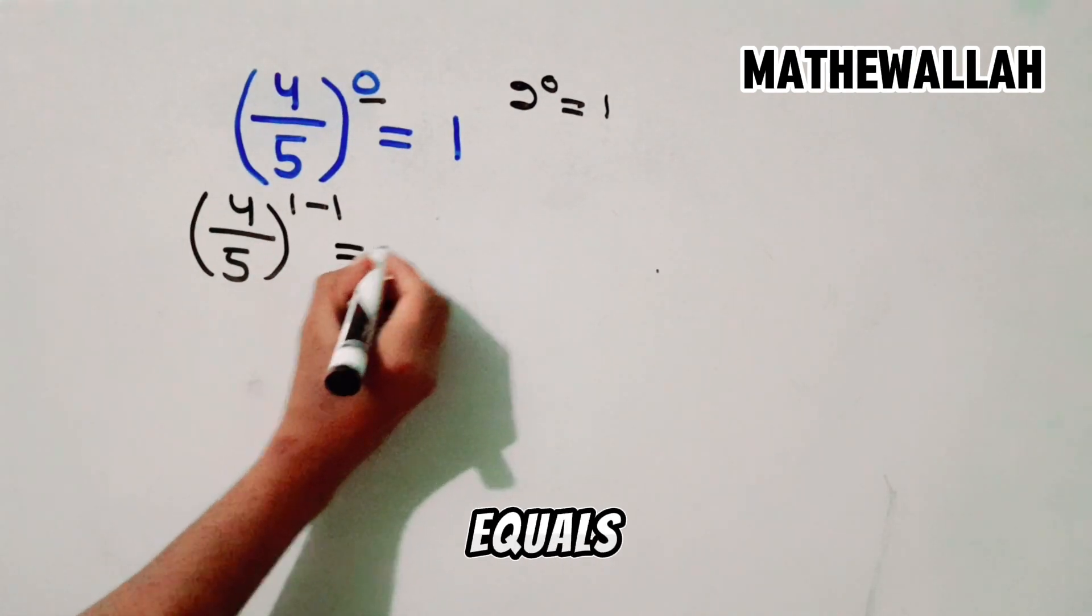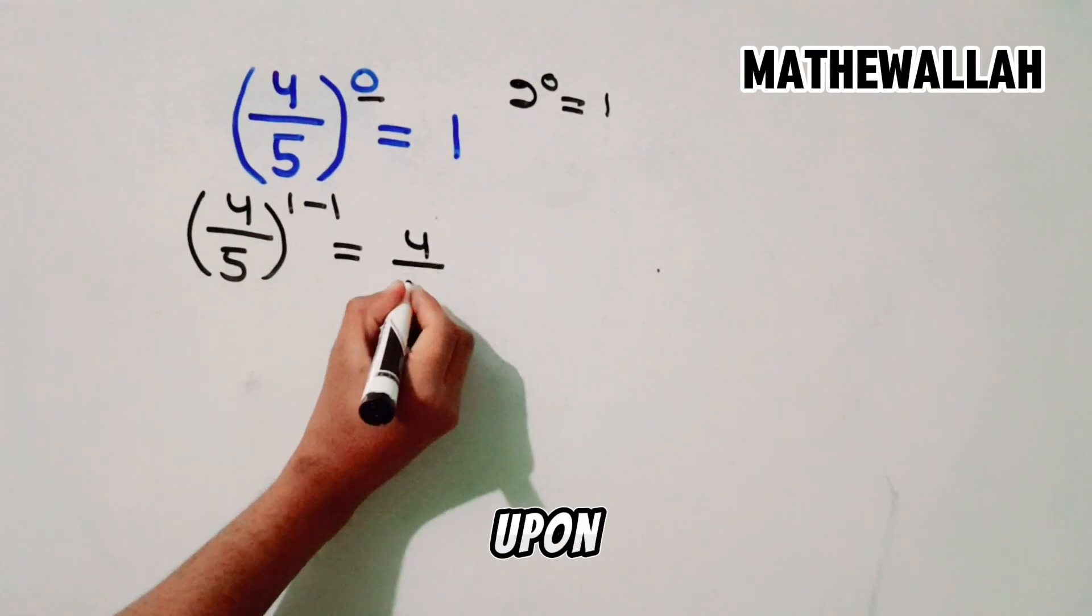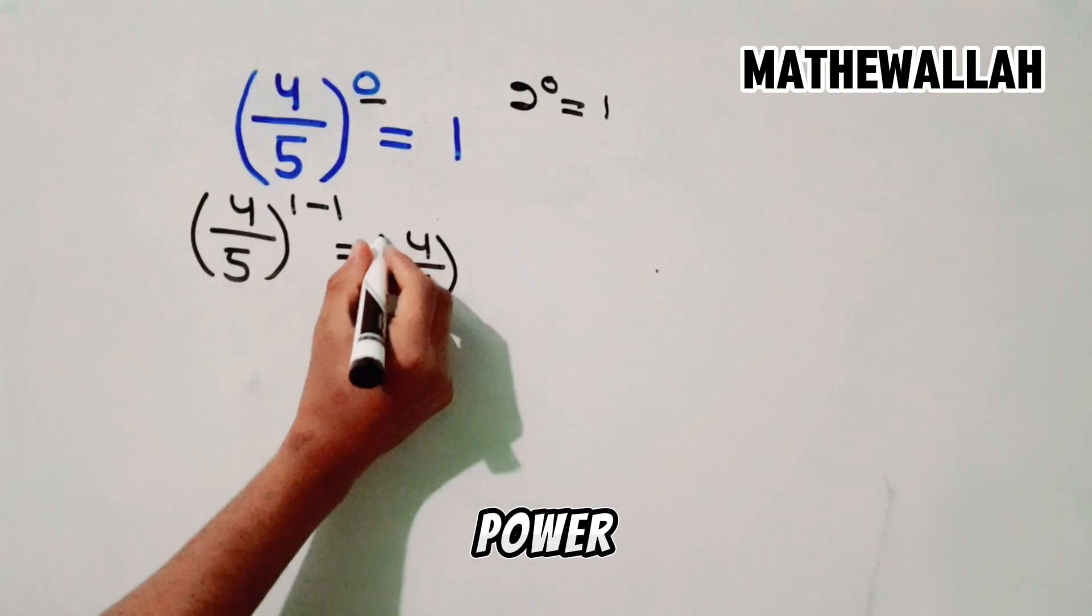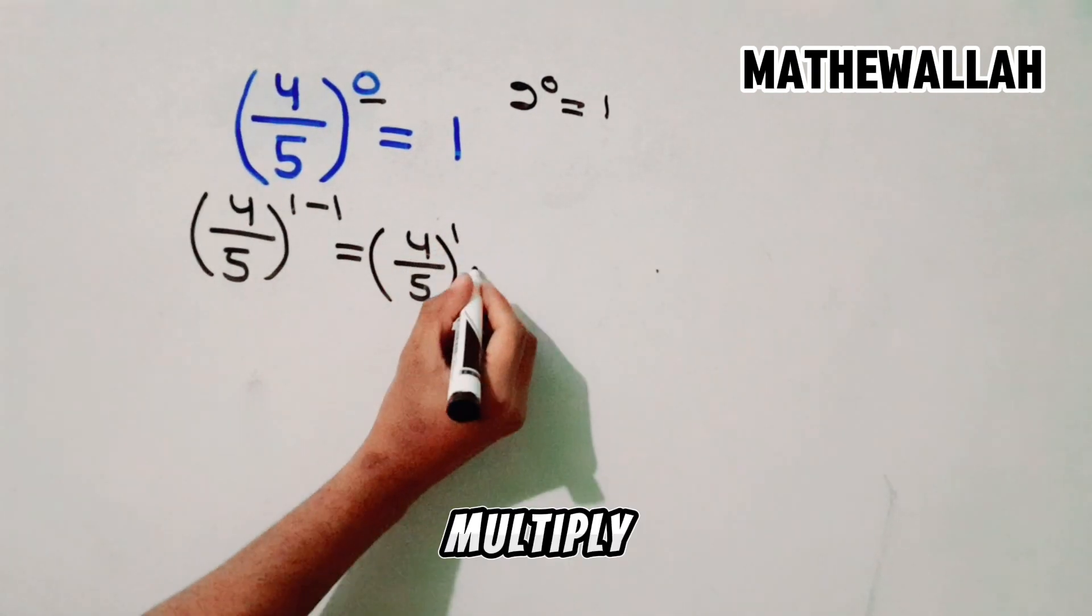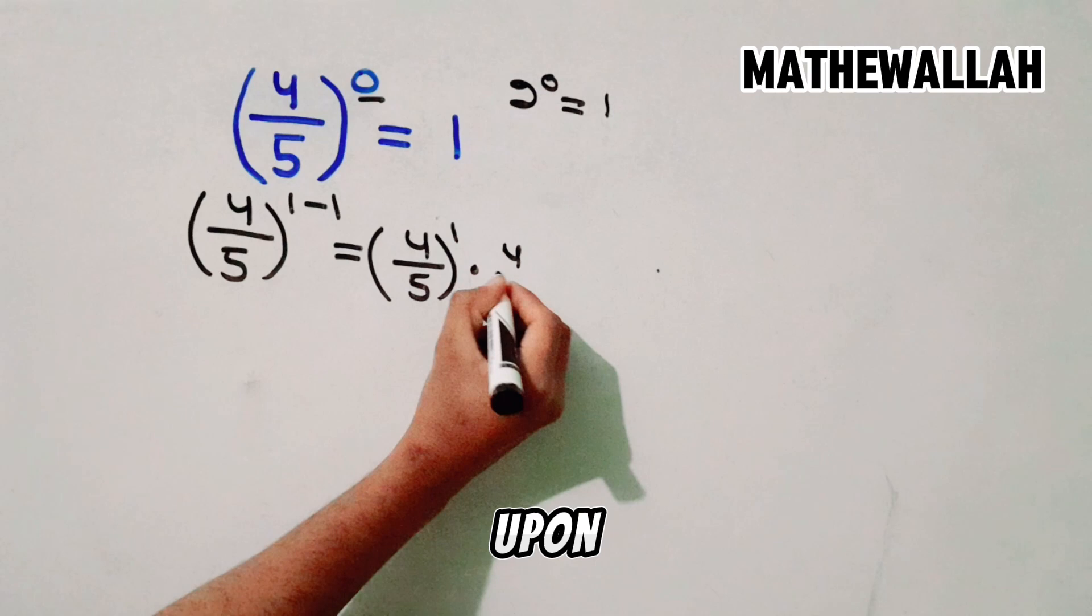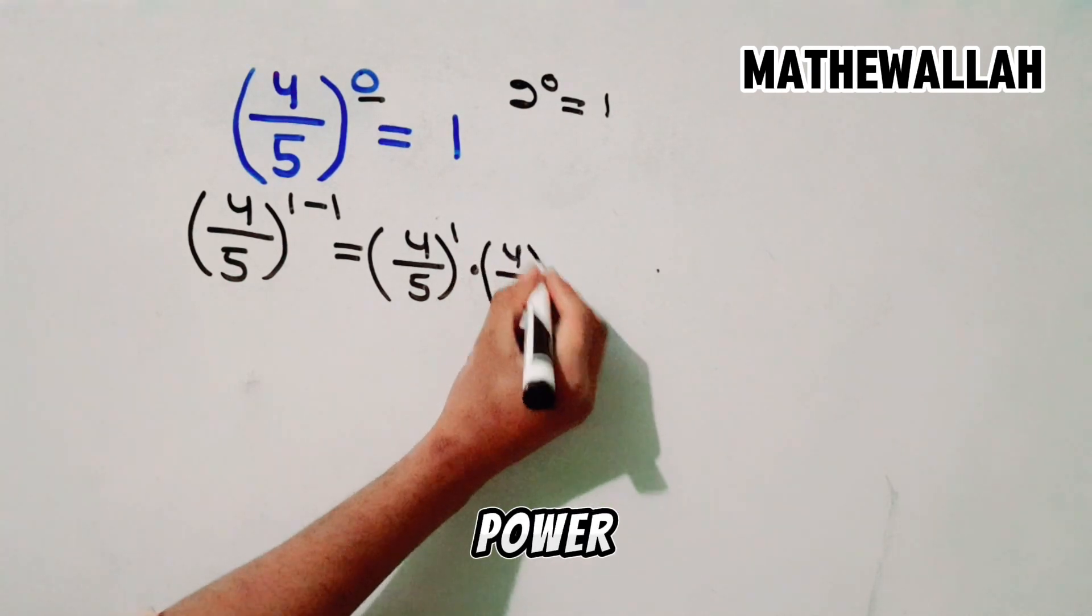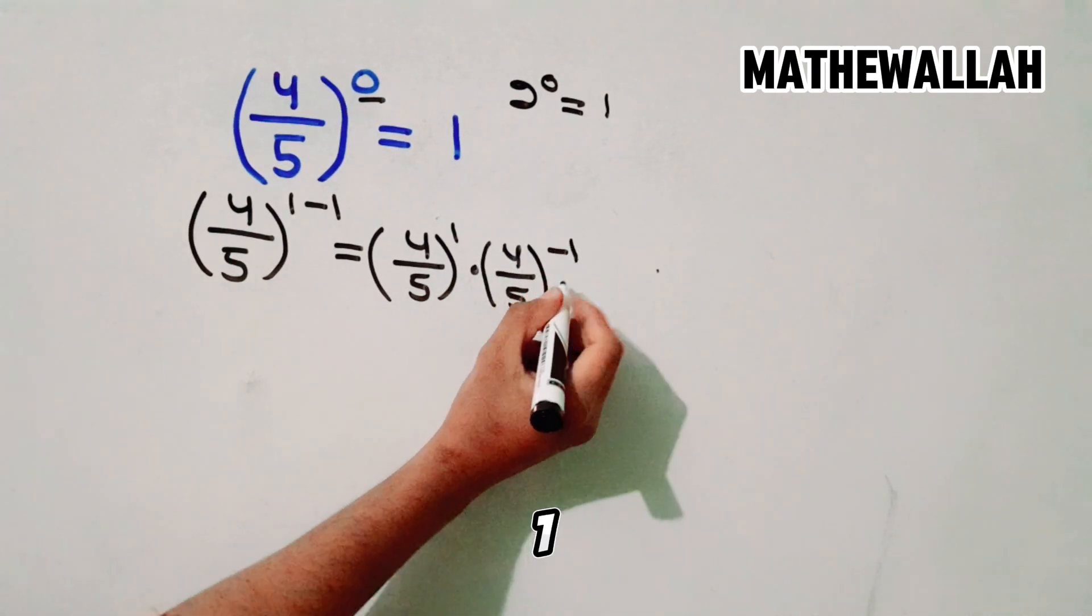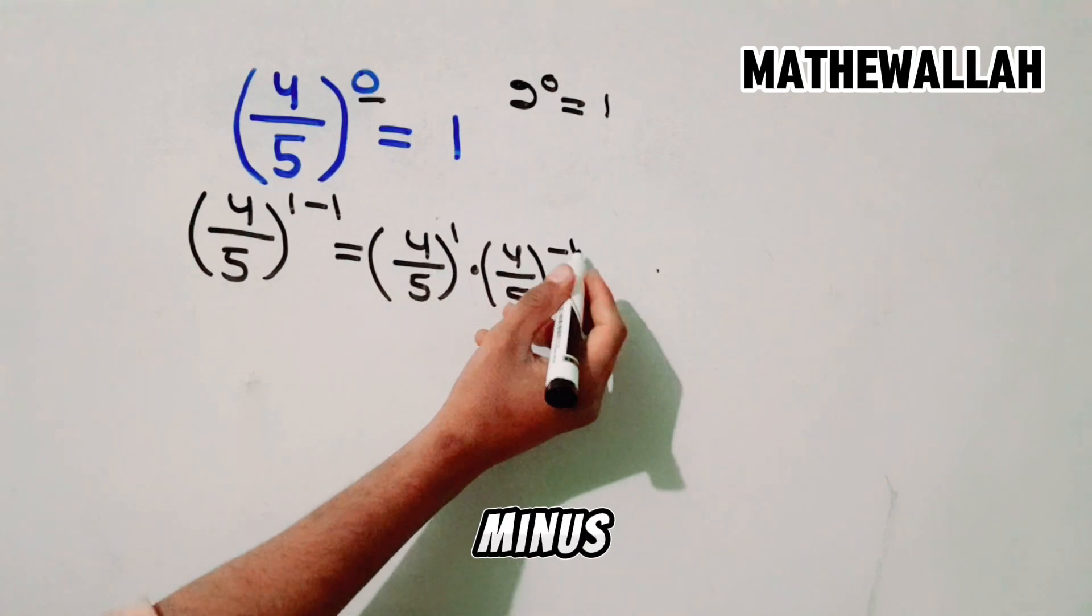So this equals to 4 upon 5 whole power 1 multiply by 4 upon 5 whole power minus 1. So minus 1.